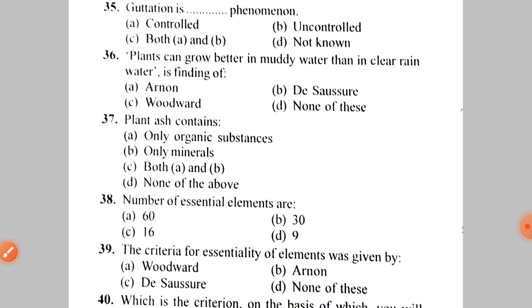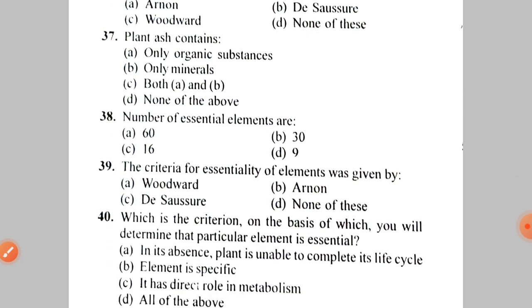Next question: the criteria for essentiality of elements was given by A. Woodward, B. Arnon and Stout, C. D. Saucer, D. None of these. The correct answer is B — Arnon and Stout.